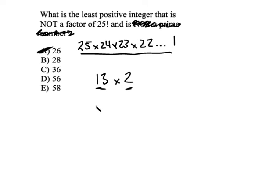28, well, I can break that down right away into 14 and 2. Sure enough, 14 comes up in here somewhere, and so does 2. So that is a factor, and it's out.